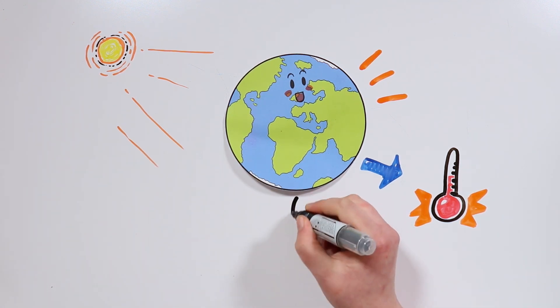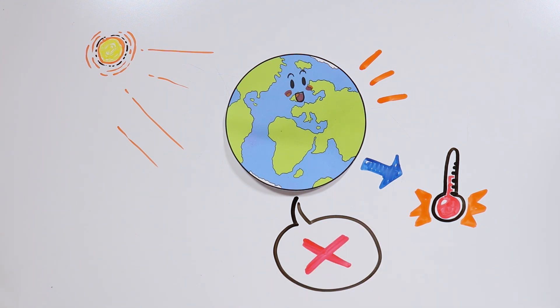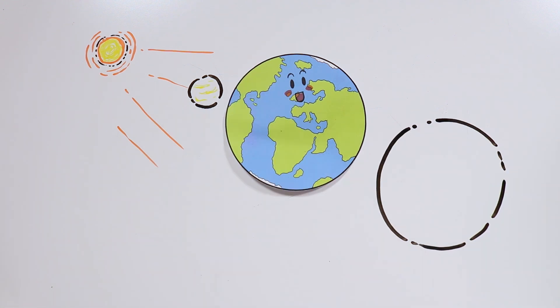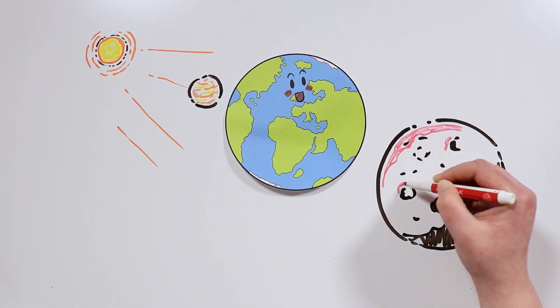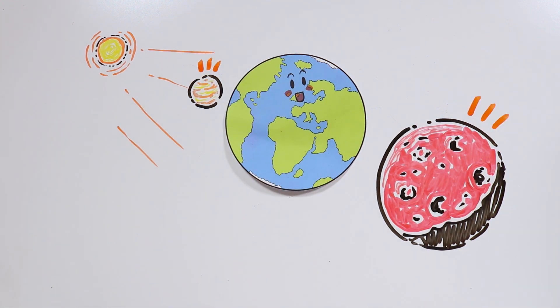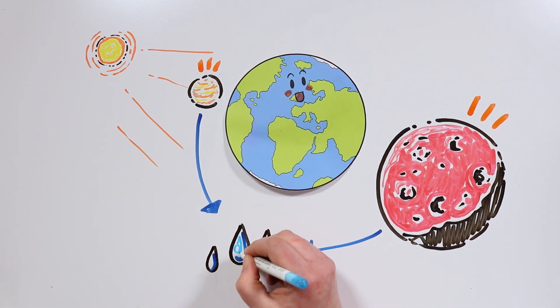And you know what's fascinating? Years ago, Earth was not the only planet like this. Venus and Mars were also located in the Goldilocks zone, and it's also believed that they might have liquid water on their surfaces.